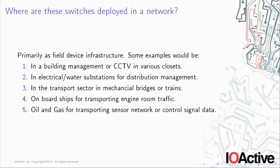So where do you find these switches deployed? They will be deployed wherever they need to be in terms of the network. If you're dealing with a building management system, they're likely in a nice closet somewhere. If you're in the electricity or water space, they'll be out at substations — at the bottom of your street or in the middle of a field. In the transport sector, they could be on bridges, trains, ships, oil rigs, or gas fields. So these devices get dropped in just about anywhere, and you want to set them up, put them in place, and leave them alone.